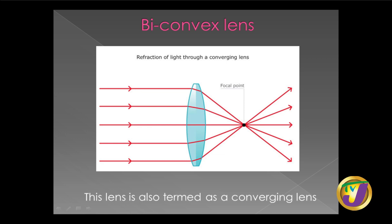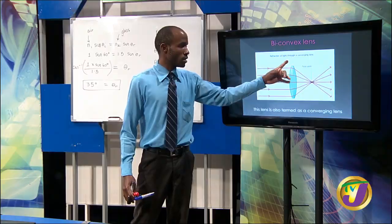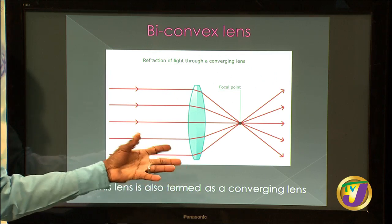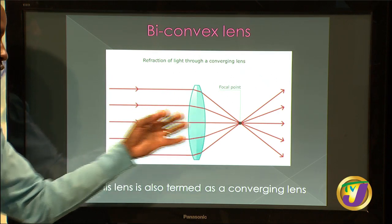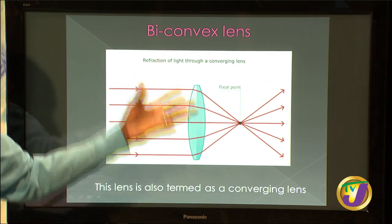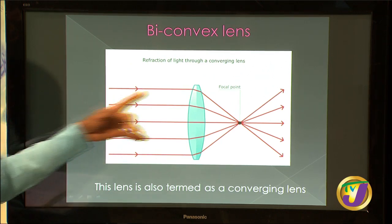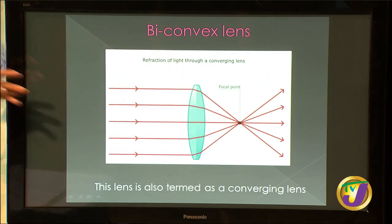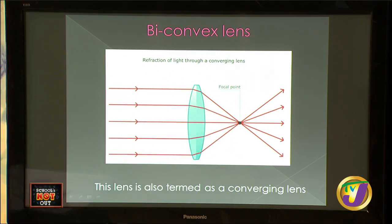Here's a diagram showing a biconvex lens. A biconvex lens can be identified by being fatter in the middle than at the ends. The red lines represent light rays passing through the lens — they pass in parallel and are brought to focus. A biconvex lens is also termed a converging lens; converge means to bring to focus. The point where rays are brought to focus is called the focal point.